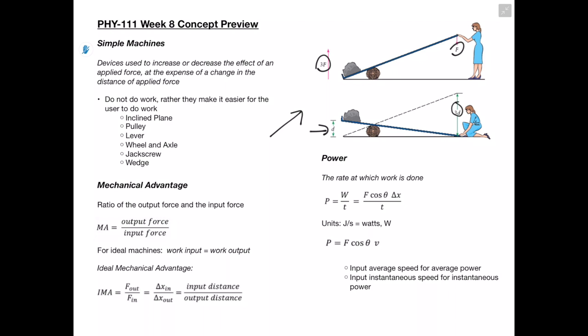Next we'll be talking about power, which is the rate at which work is done. Power is equal to work over time, and we know that work is equal to our force times cosine theta times delta x. This gives us units of joules per second, which we call watts. We can also use a simpler equation when dealing with average or instantaneous speeds, derived from delta x over t — that's equal to velocity. When we input average speed we get average power, and if we input instantaneous speed it gives us the power for that instance.